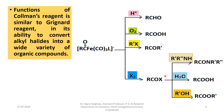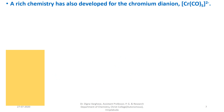By using a simple Collman's reagent, we can synthesize a number of organic compounds, which is industrially very important. Collman's reagent is similar to the Grignard reagent in converting starting materials into so many useful organic compounds, making it a very important reagent in the organic chemical industry.